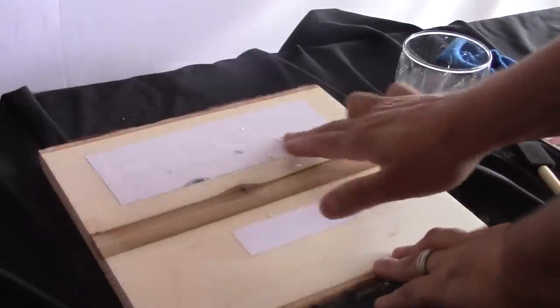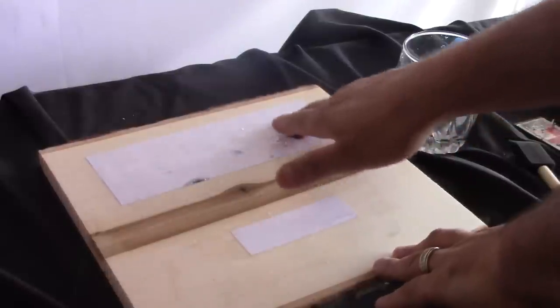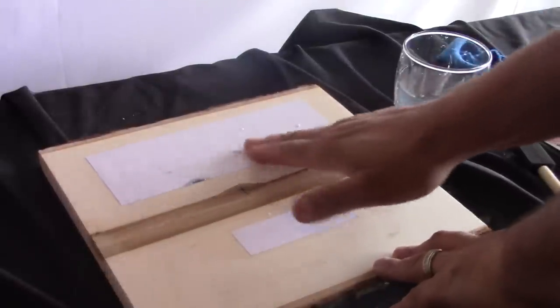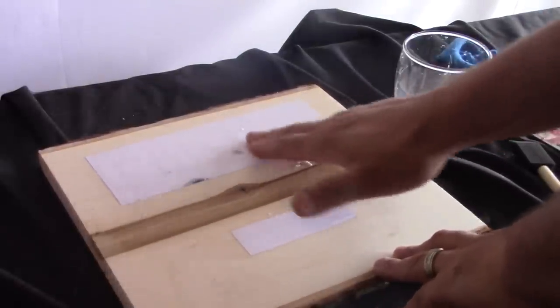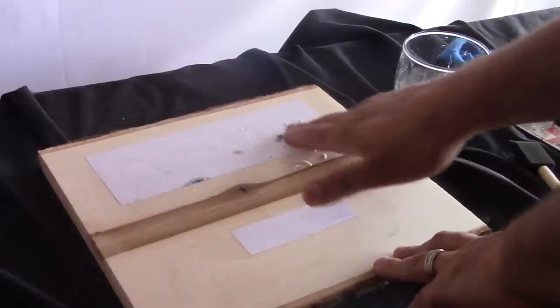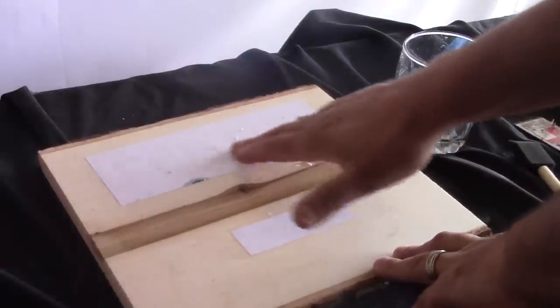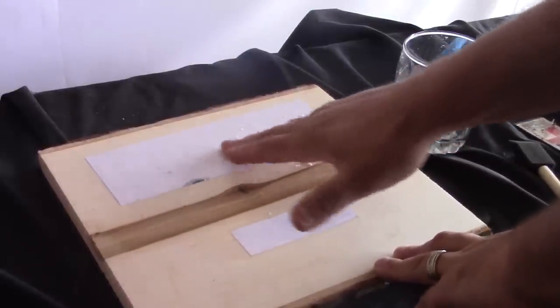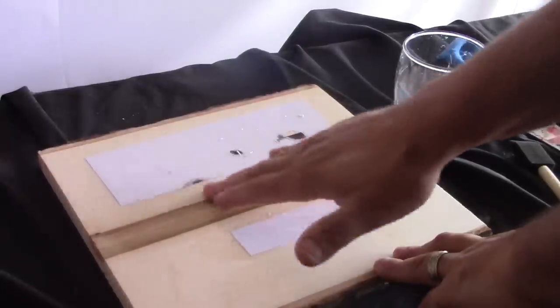Now after you have let that set for 24 hours and dry completely, you move to the next step. You just add a little bit of water on the back of the paper and start rubbing. Now you can use your finger or you can use a towel, you just have to make sure you do a little bit at a time. We don't want to be too rough with it and remove all of the ink.